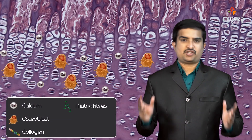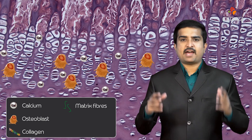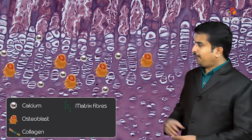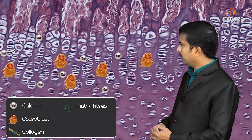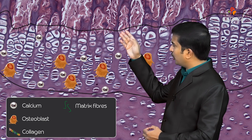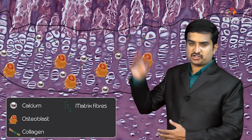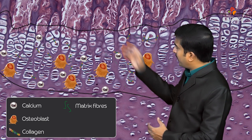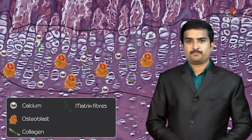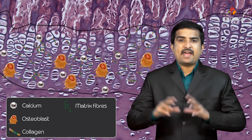Gigantism manifests in children as tall stature when the adenoma appears before epiphysial closure. In a growing bone, the epiphysial plate is where mineralization occurs via osteoblasts. Excess growth hormone causes excessive mineralization at the epiphysial plate, increasing the length of long bones. Therefore, in gigantism, there are taller long bones, with no manifestations in short bones or cranial bones.